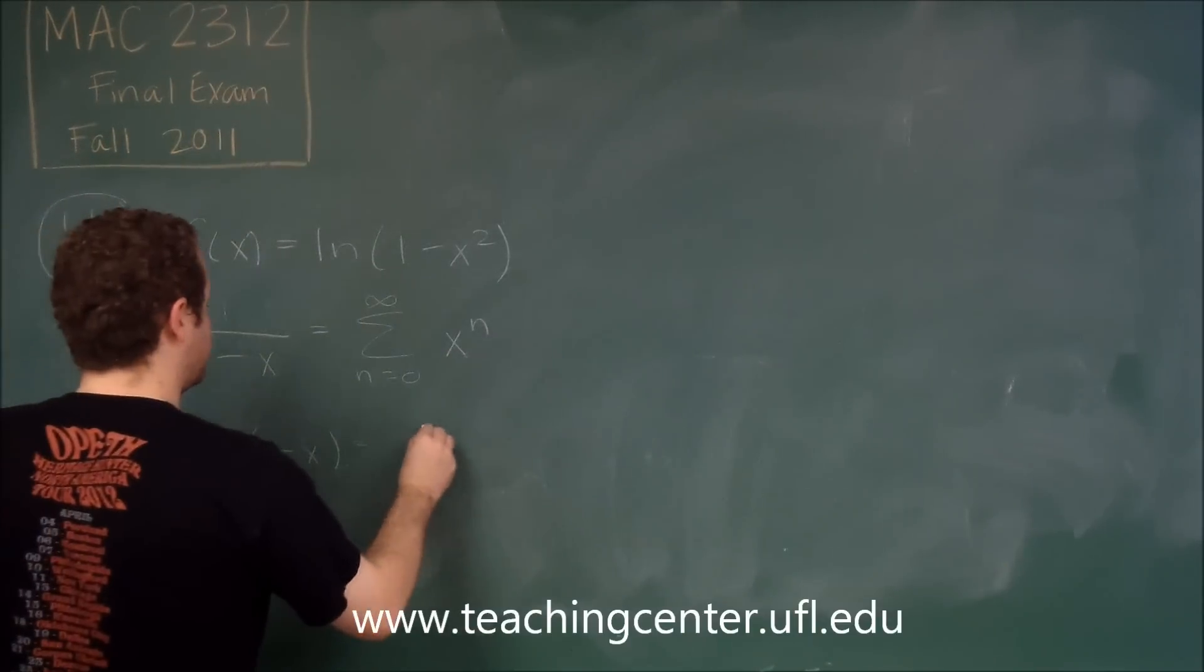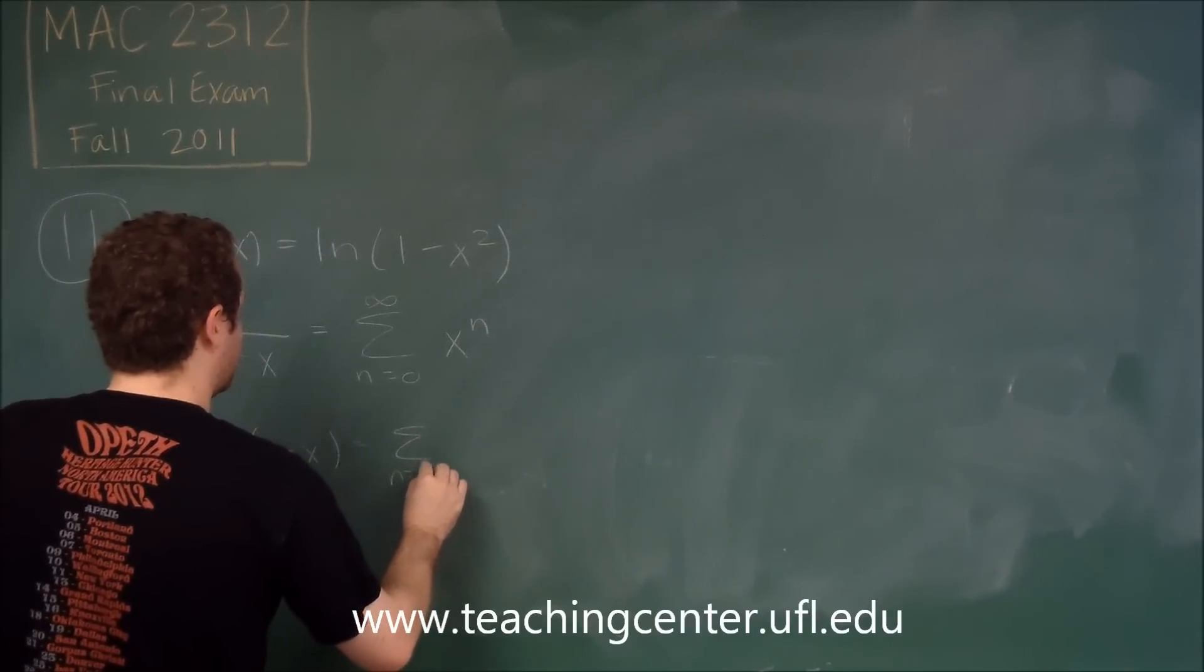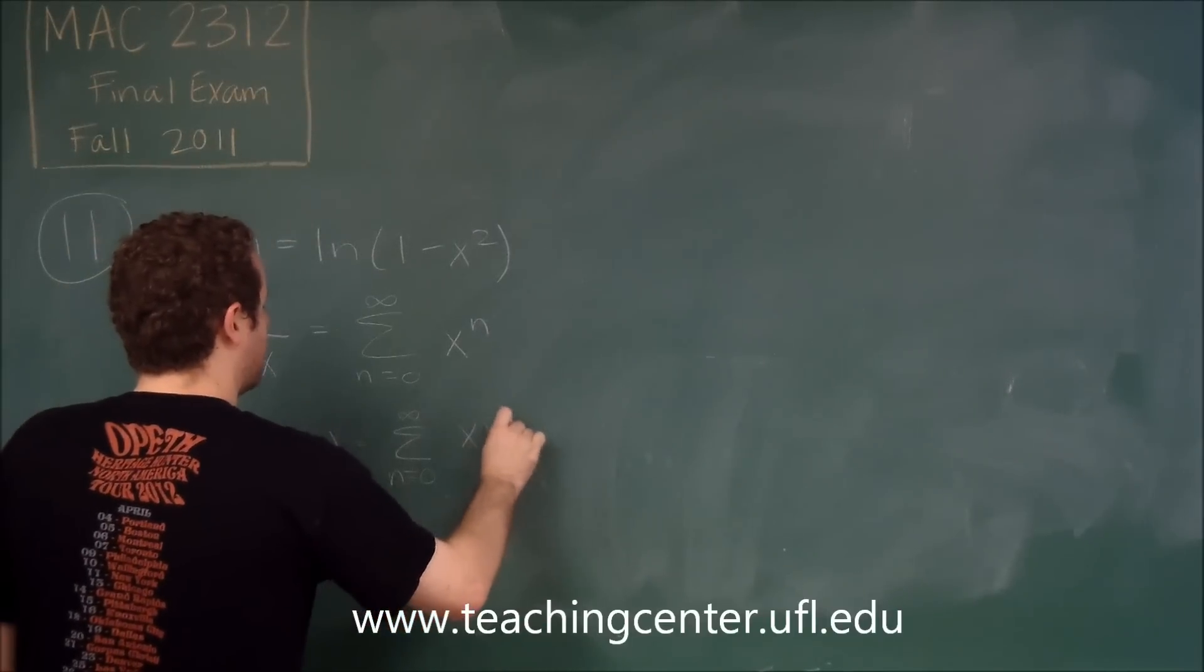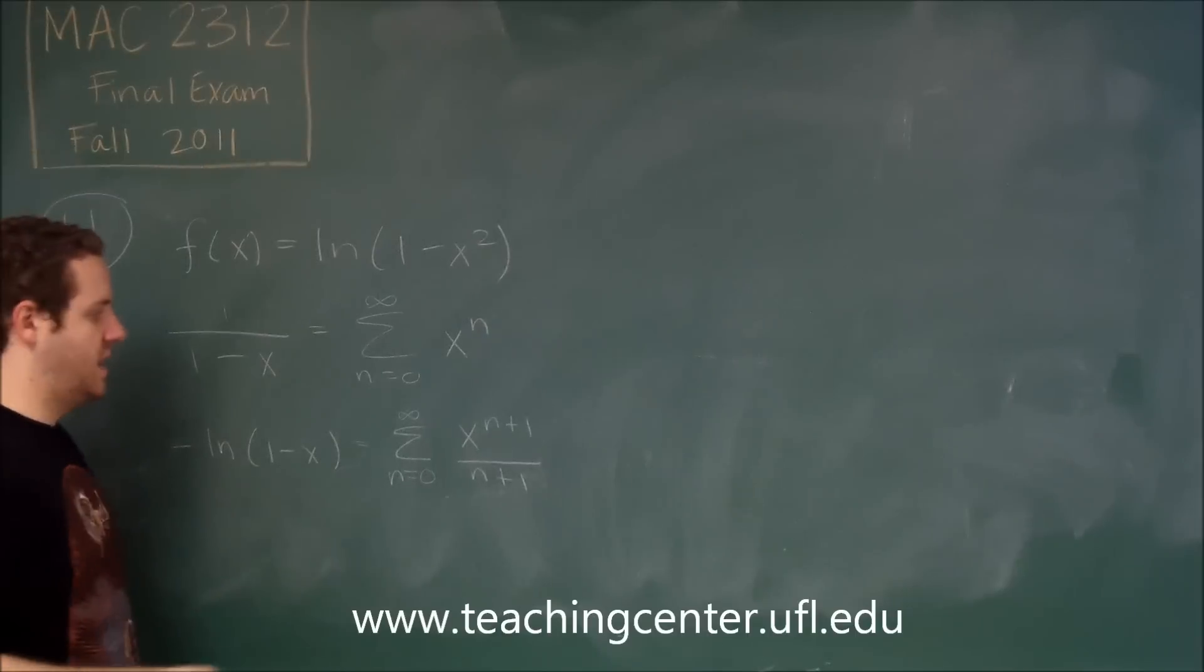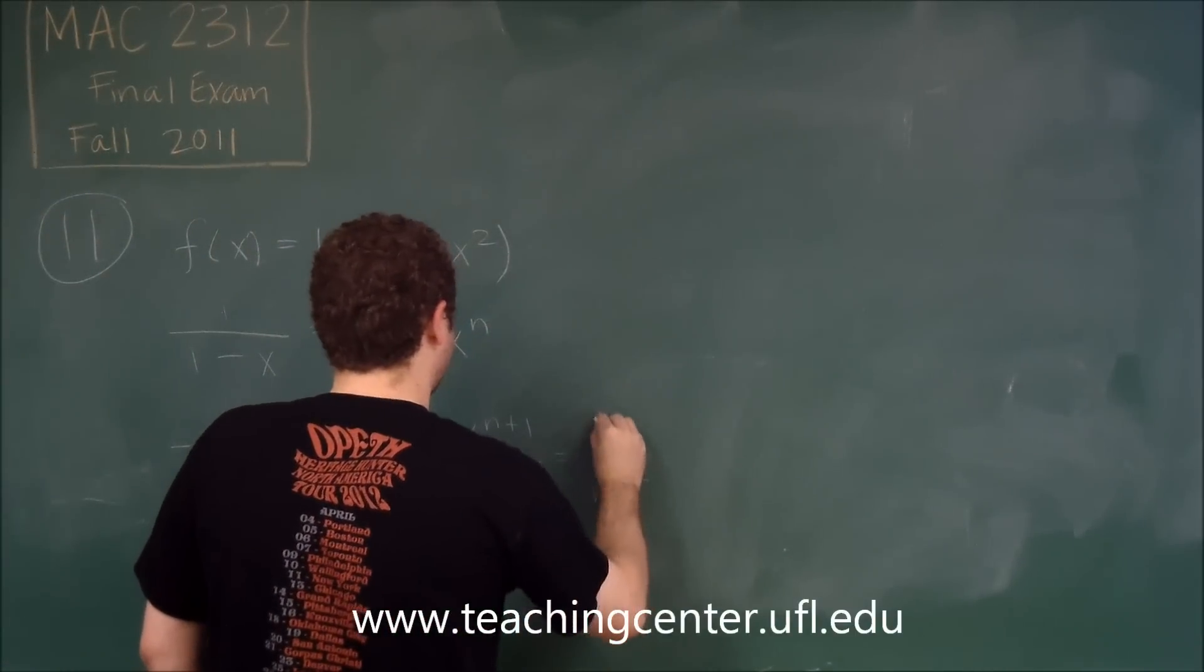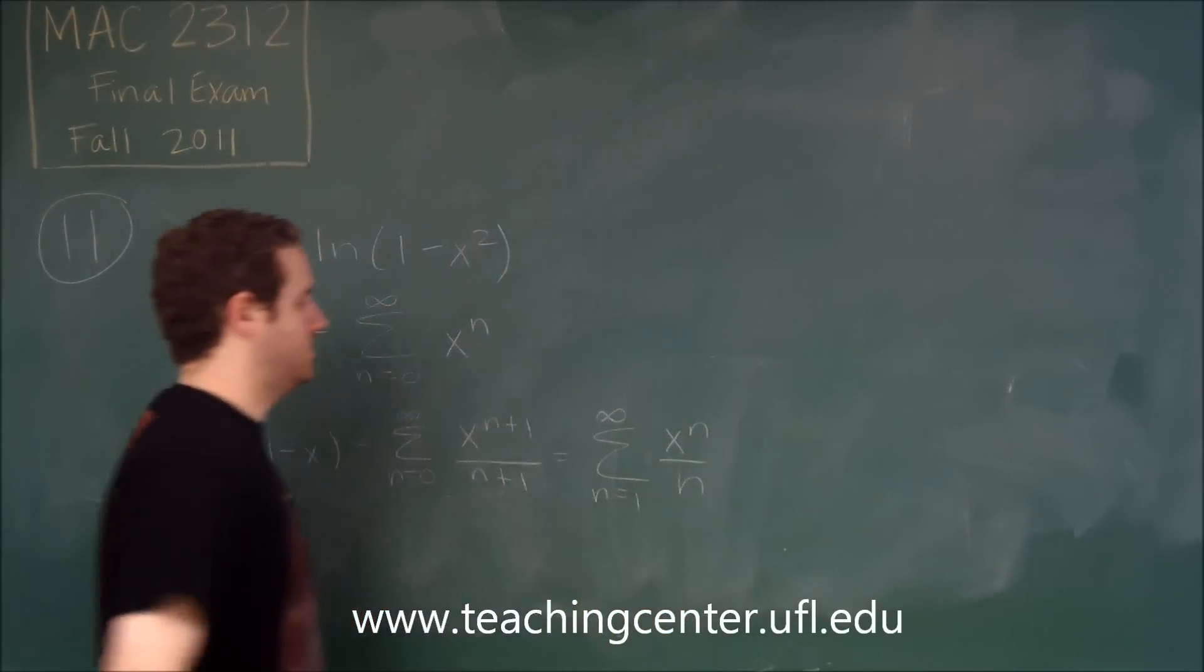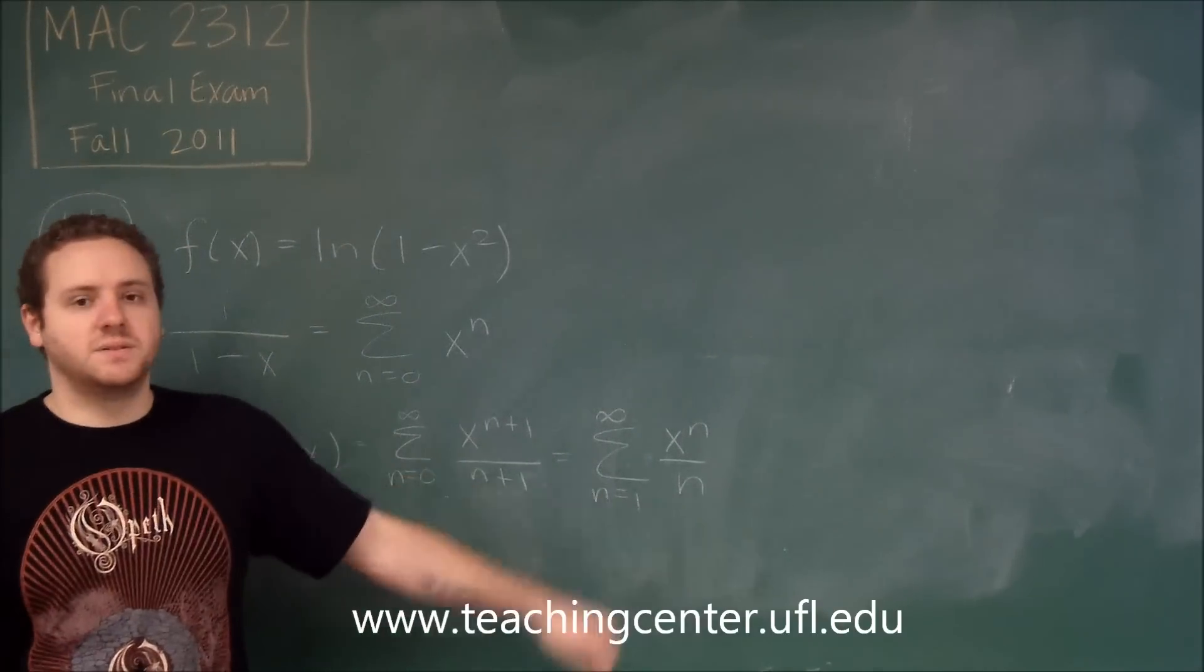So therefore, if this is equal to, we now have n equals, so if we had n equals 0, we would have x^(n+1)/(n+1). Instead we can just change that to n equals 1 of x^n/n. So this function right here would have this power series.